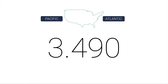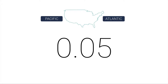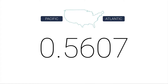How about 3.490? There's a decimal present, so we start on the Pacific side: one, two, three, four — four significant figures. How about 0.05? Decimal is present, so we start on the Pacific side. We don't count those first two zeros, and we just count that one digit — so there's only one significant figure in this measurement.